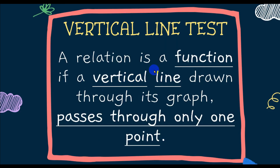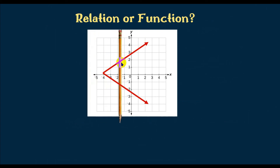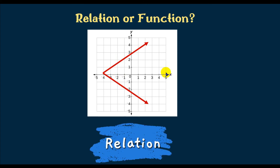Let's look at another graph using the vertical line test. The vertical line should pass through only one point. Using a pencil as the vertical line, we can see it passes through two points on this graph. When the vertical line hits more than one point, the graph represents a relation only — not a function.